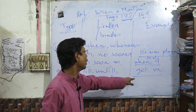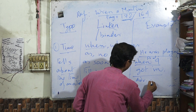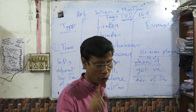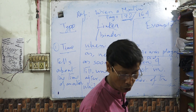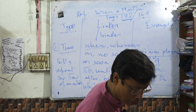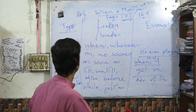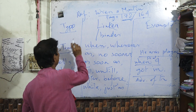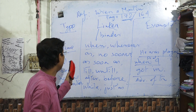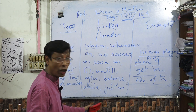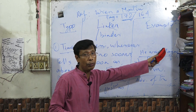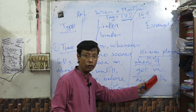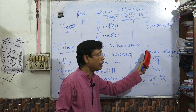Example: 'He was playing when I got in.' Here, 'he was playing' is the principal clause, and 'when I got in' is the subordinate adverbial clause of time. You need to identify and write these down. The linker 'when' connects the two clauses.